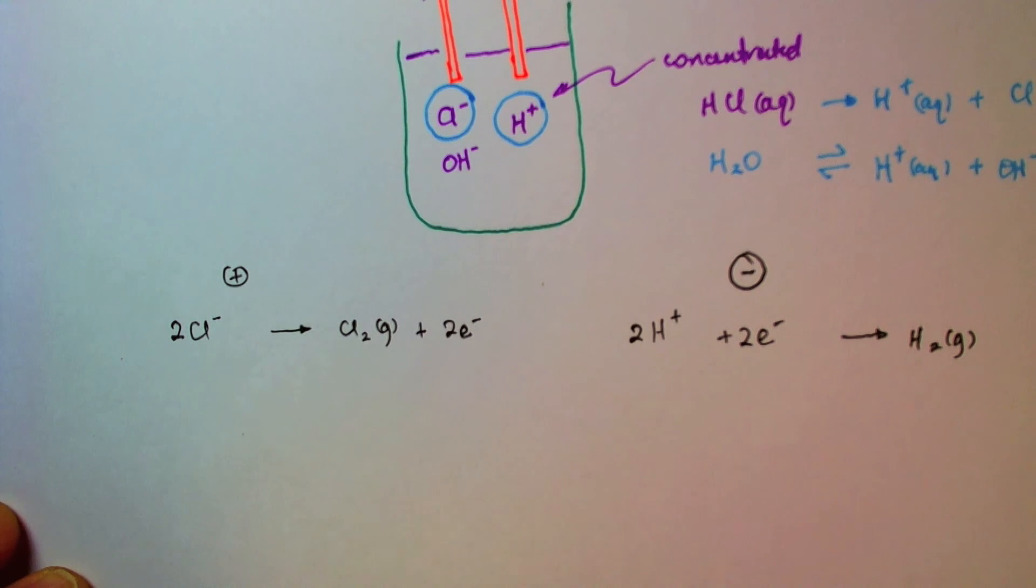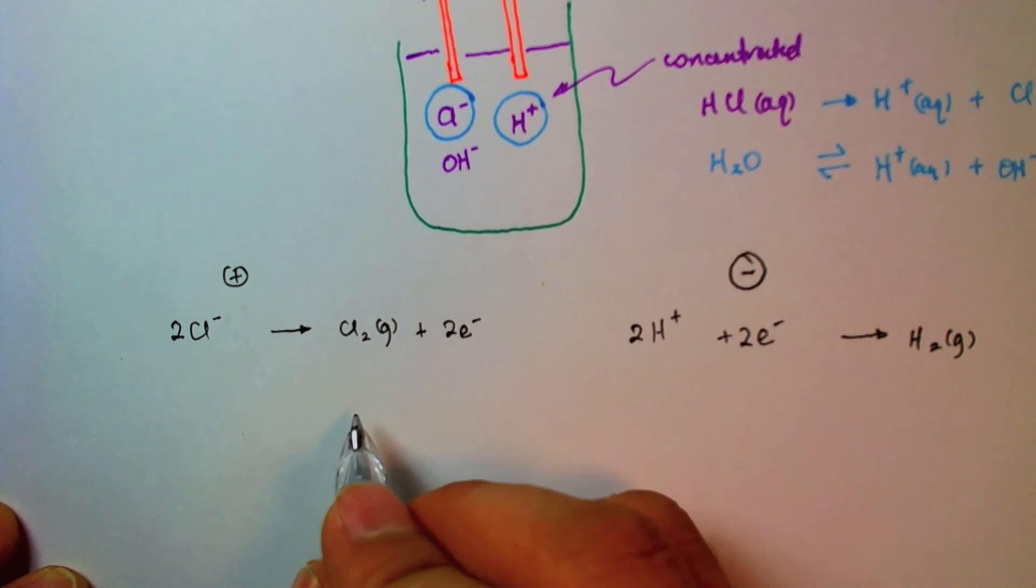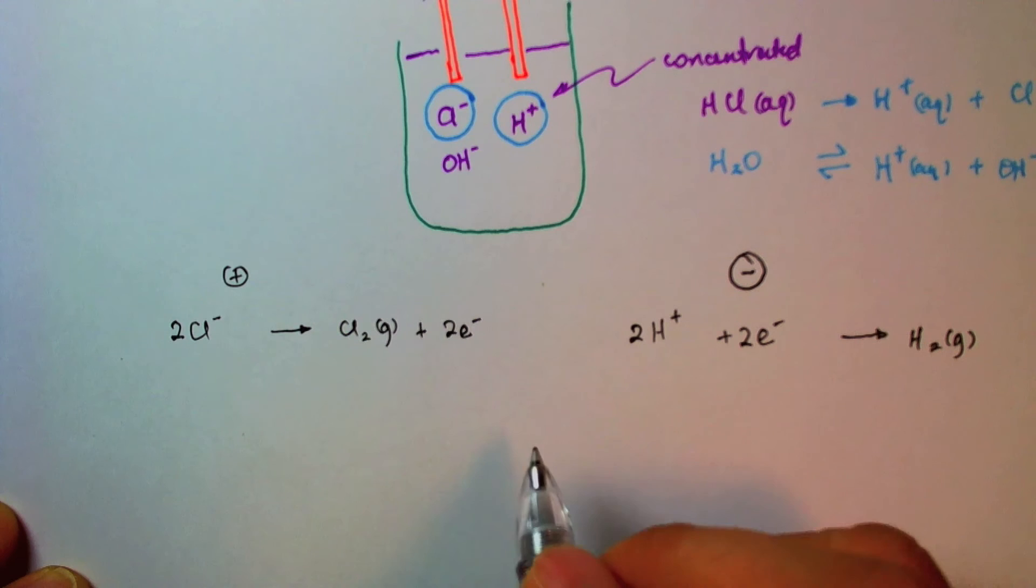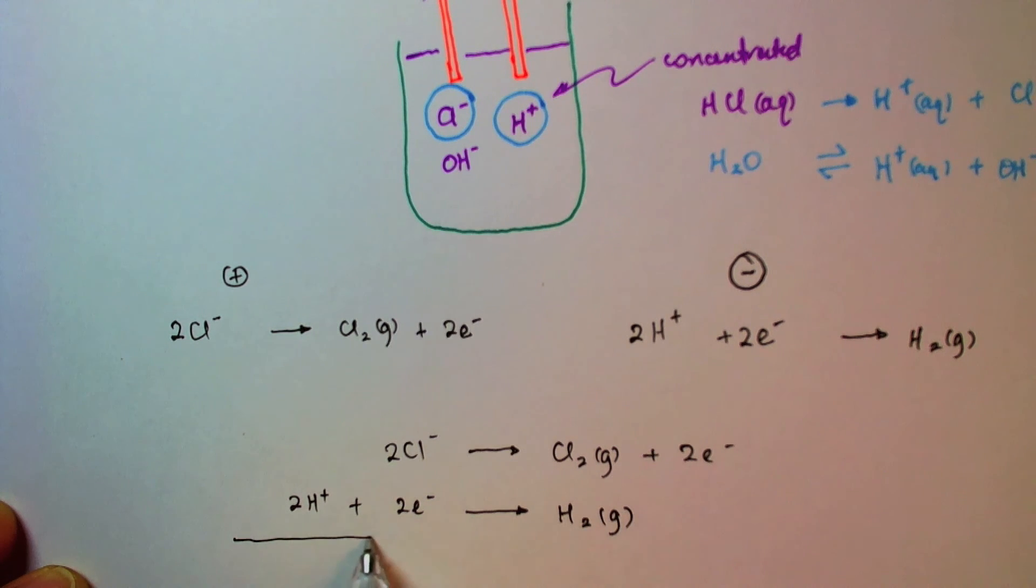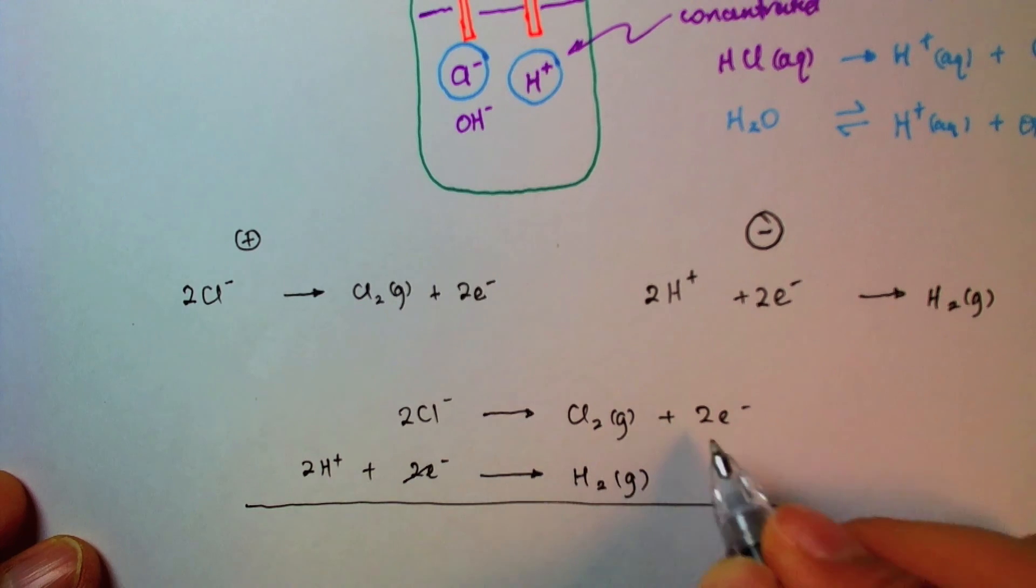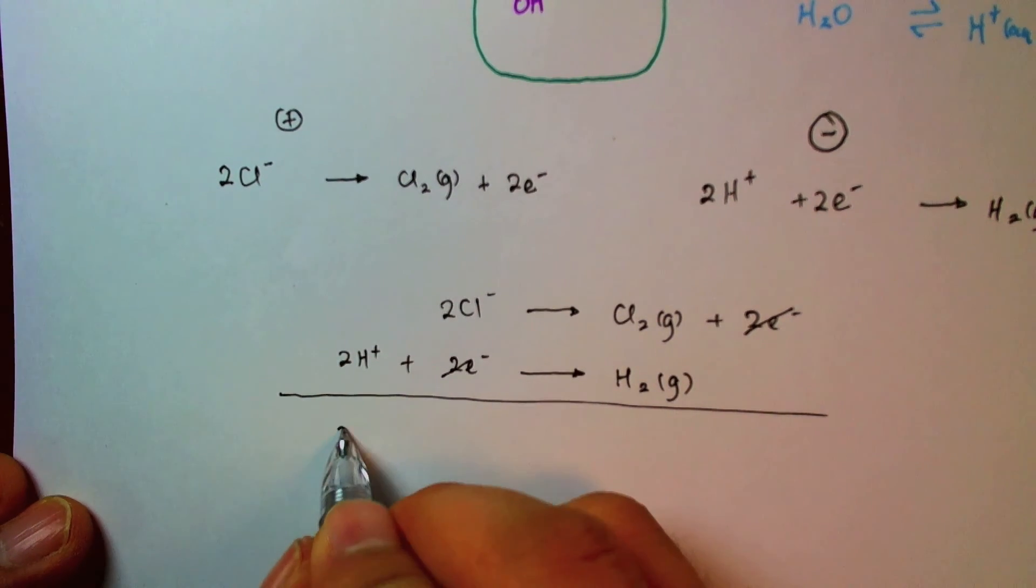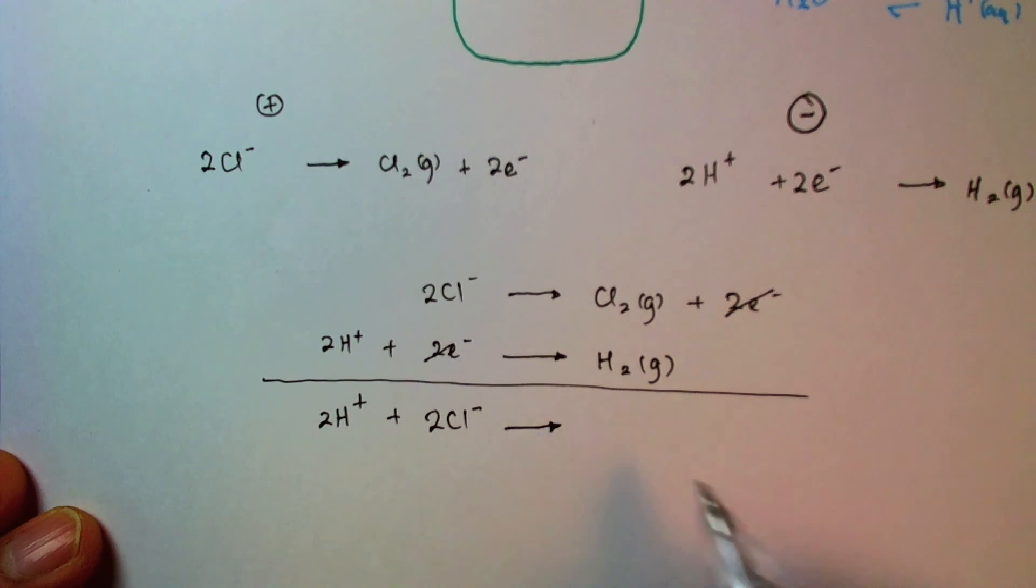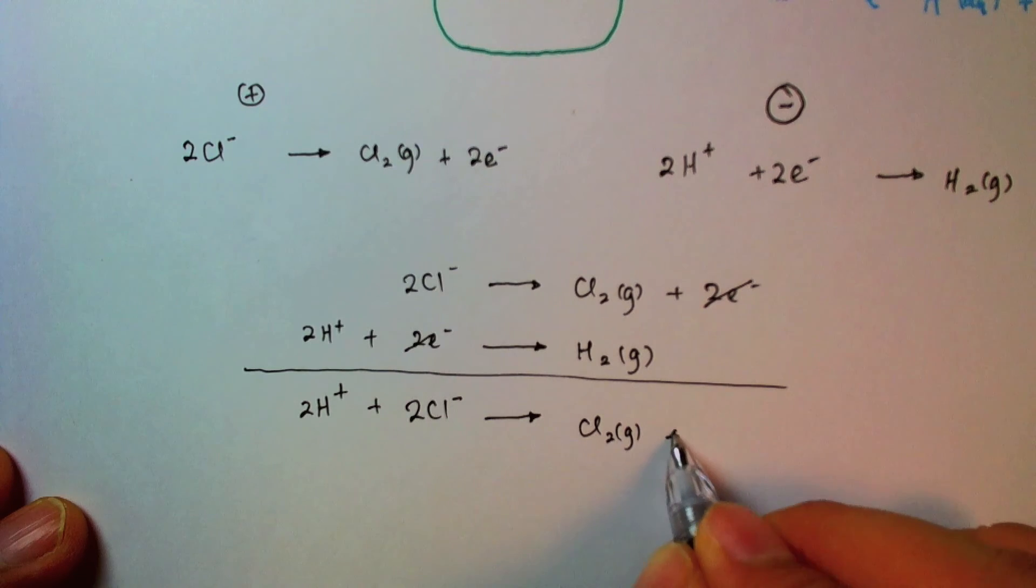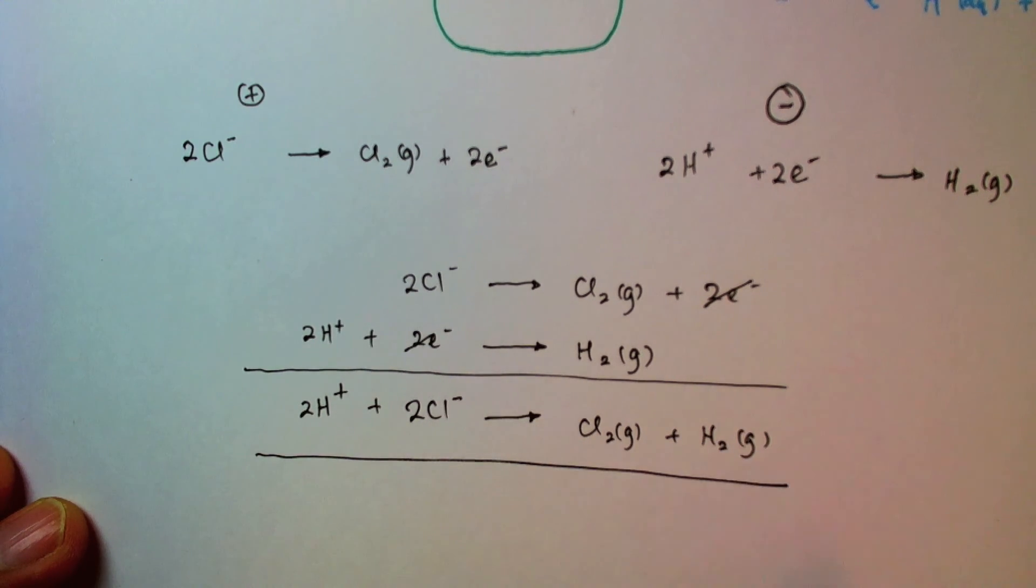And once again, I can combine these two half equations to give me the overall equation for this reaction. So I will have gas plus two electrons. And at the cathode, the two hydrogen atoms receive two electrons and form hydrogen gas. So since I have two electrons on the left side, two electrons on the right side, I can cancel them. And so my overall equation becomes hydrogen and chlorine ions form chlorine gas and hydrogen gas. So those are the products of my electrolysis.